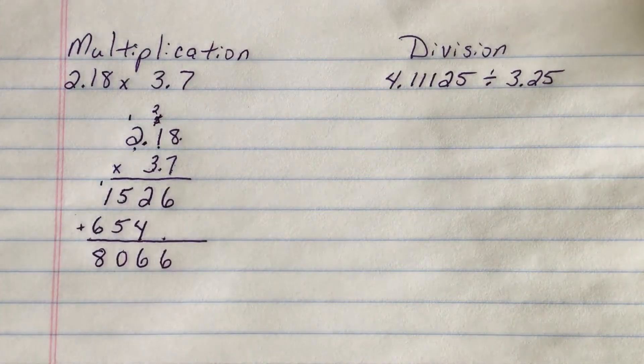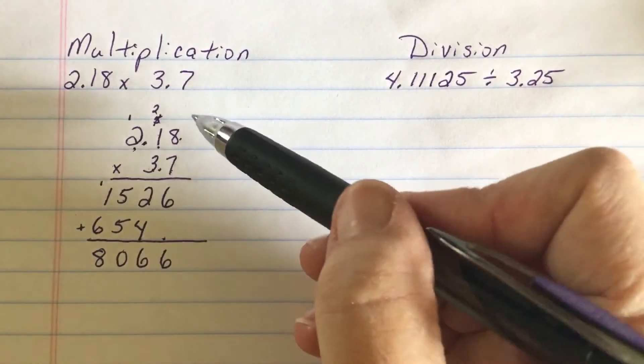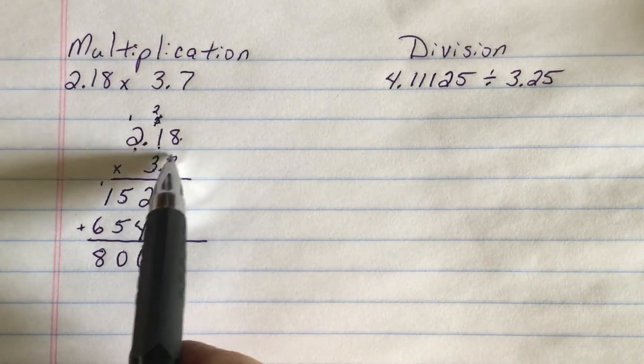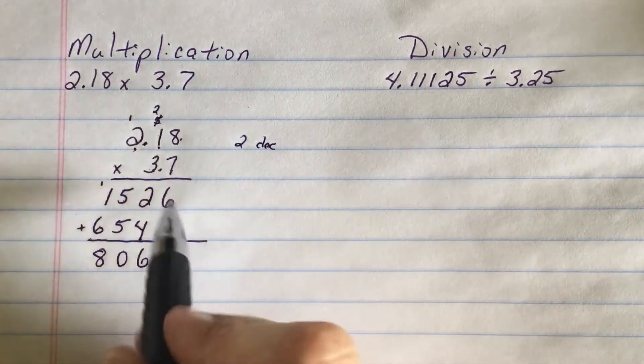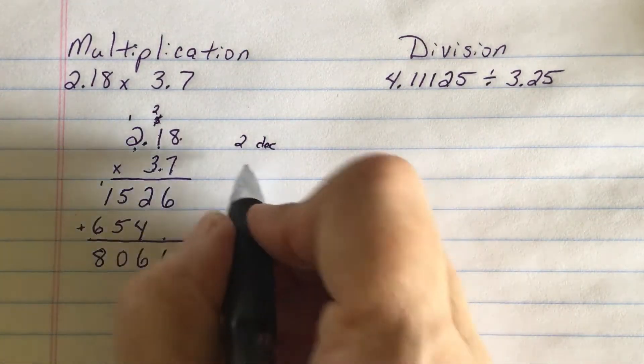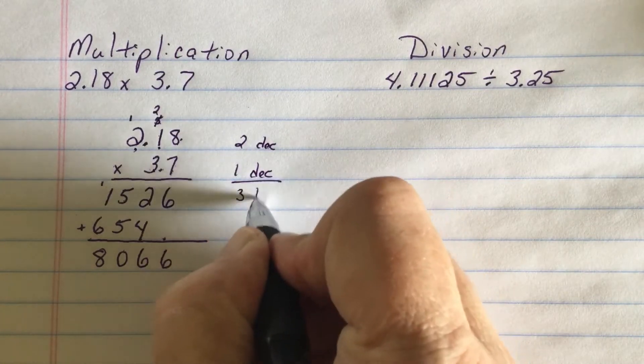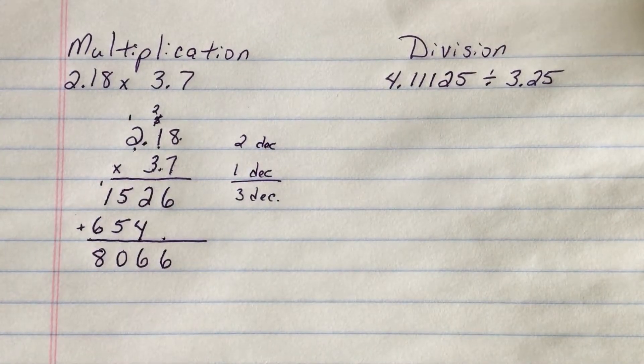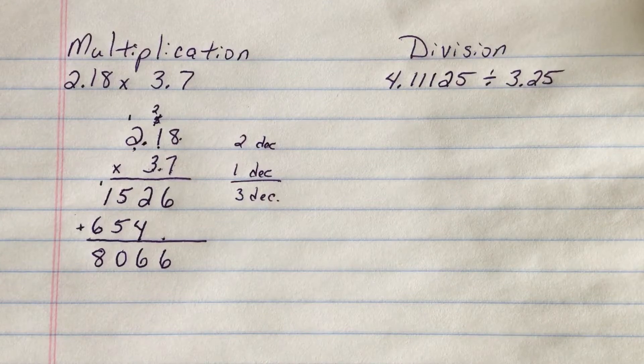Now here's where the decimals come into play. I now go back and count how many decimal places are in the original numbers. I see one, two. So there's two decimal places in the first one and only one in the second for a total of three decimal places. So that means how many places from the right I'm going to count to the left to put in decimal place.